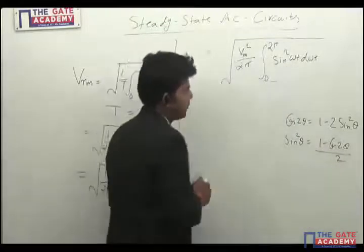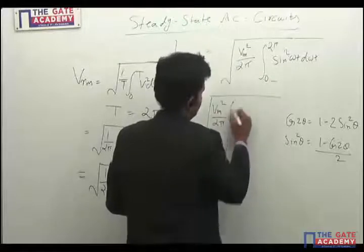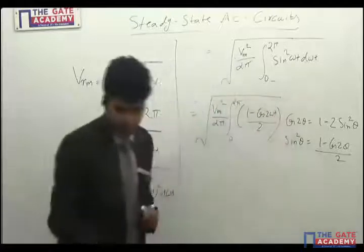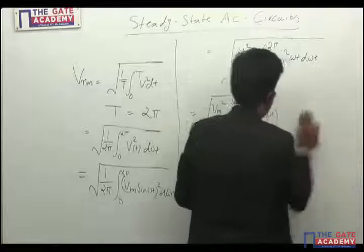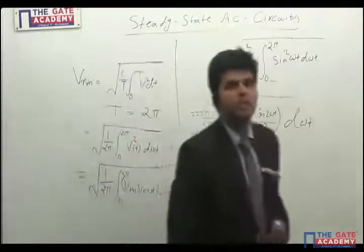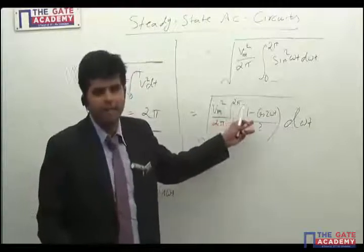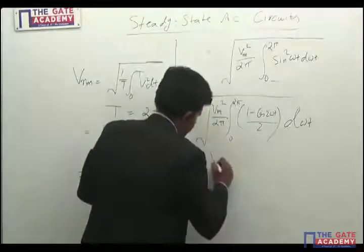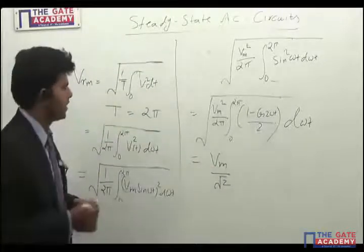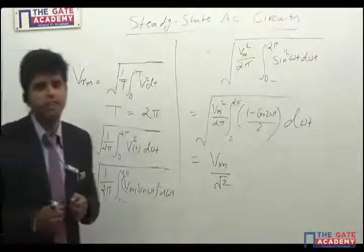Integrating: the integral of a constant is ωt and the integral of cos(ωt) is sin(ωt). After evaluating from 0 to 2π, you get the RMS value as V_m/√2. This is a very standard result — the RMS value of a sinusoidal signal is V_m/√2.